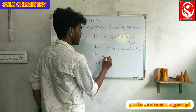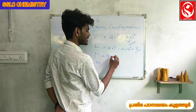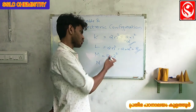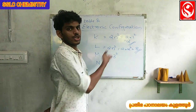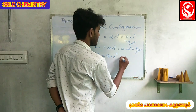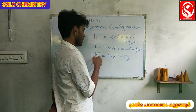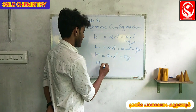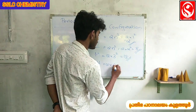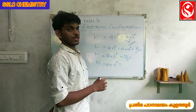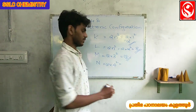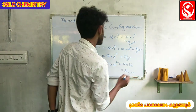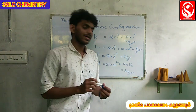M shell: 2 into 3 squared equals 2 into 9, which is 18 electrons. M shell holds 18 electrons. N shell: 2 into 4 squared equals 2 into 16, which is 32 electrons. N shell holds 32 electrons.